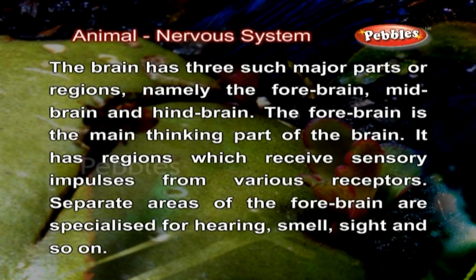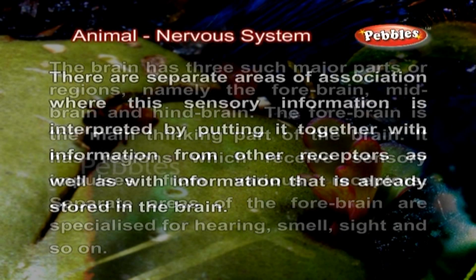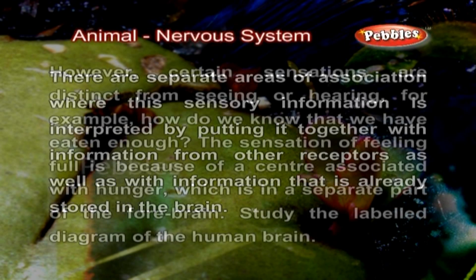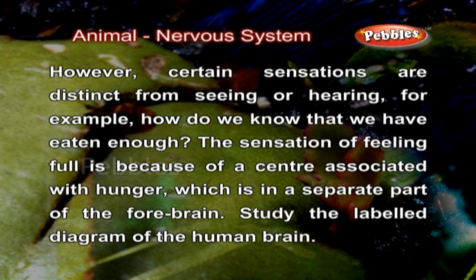The forebrain is the main thinking part of the brain. It has regions which receive sensory impulses from various receptors. Separate areas of the forebrain are specialized for hearing, smell, sight and so on. There are separate areas of association where this sensory information is interpreted by putting it together with information from other receptors as well as with information already stored in the brain. For example, how do we know that we have eaten enough? The sensation of feeling full is because of a center associated with hunger, which is in a separate part of the forebrain.